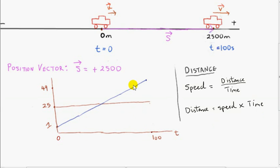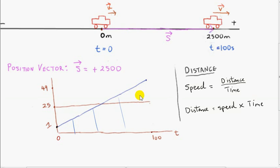I also said in the previous video that I chose the initial speed of 1 and the final speed of 49 for the second scenario in such a way that the distance travelled by the car under this second scenario is also 2500 meters. That's equal to the area under this blue line. So in general, the area under a velocity-time graph is the distance travelled by the object.